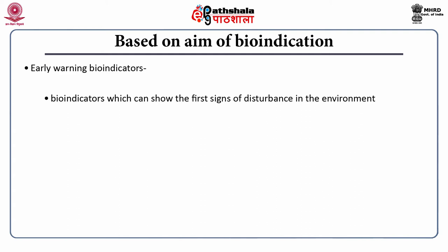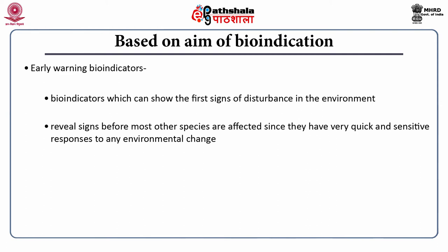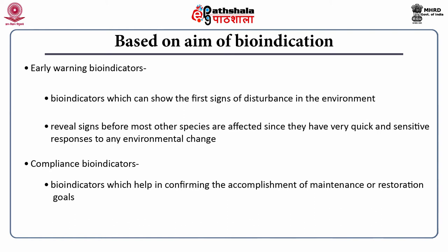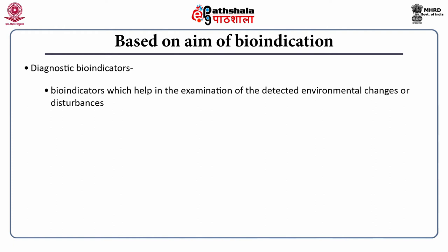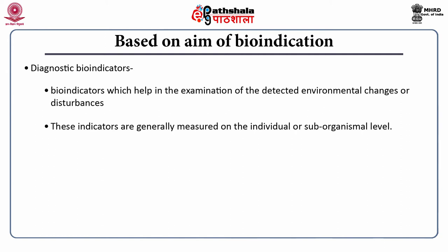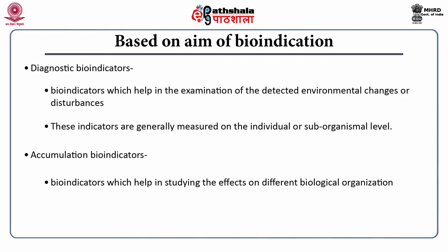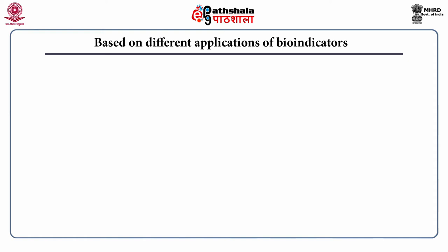Early warning bio-indicators are the first ones to show any sign of disturbance in the environment and they reveal signs before most of the other species are affected, making them very quick and sensitive to any changes. Compliance bio-indicators are helpful in confirming the accomplishment of maintenance or restoration goals — for example, measurement of fish characteristics as a bio-indicator for the sustainability of a population or community. Diagnostic bio-indicators are helpful in the examination of detected environmental changes or disturbances and are generally measured at the individual or sub-organismal level. Accumulation bio-indicators are helpful in studying the effects on different biological organizations — for example, mosses, lichens, etc.